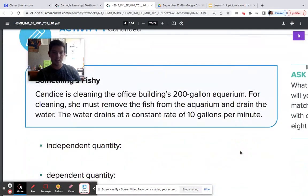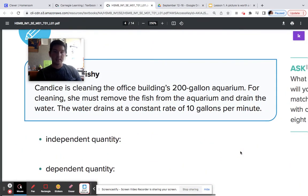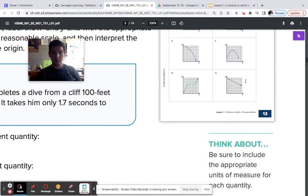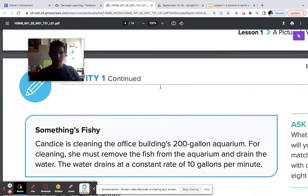Now, if we're looking at this here, we already discussed this. We would label our x-axis here as our time in minutes. Our y-axis is our dependence, so we're going to label that as water and gallons, decreasing out of that aquarium.